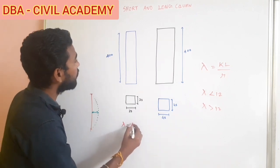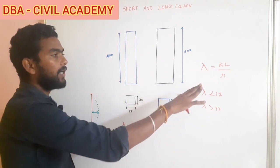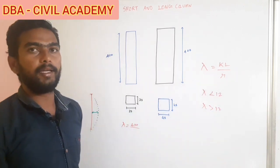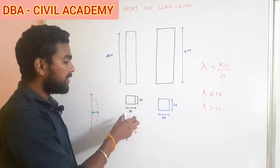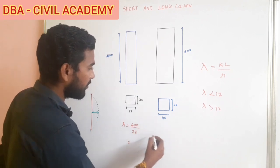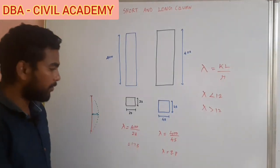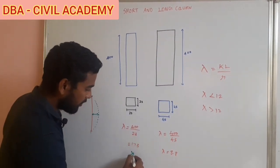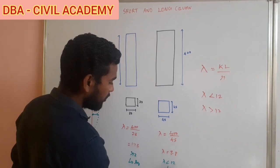Lambda equals KL/R. For the 23×23 column: 400 divided by the radius of gyration gives approximately 17.3. For the 45×45 column: 400 divided gives approximately 8.8. Since 17.3 is greater than 12, that is a long column. Since 8.8 is less than 12, that is a short column.